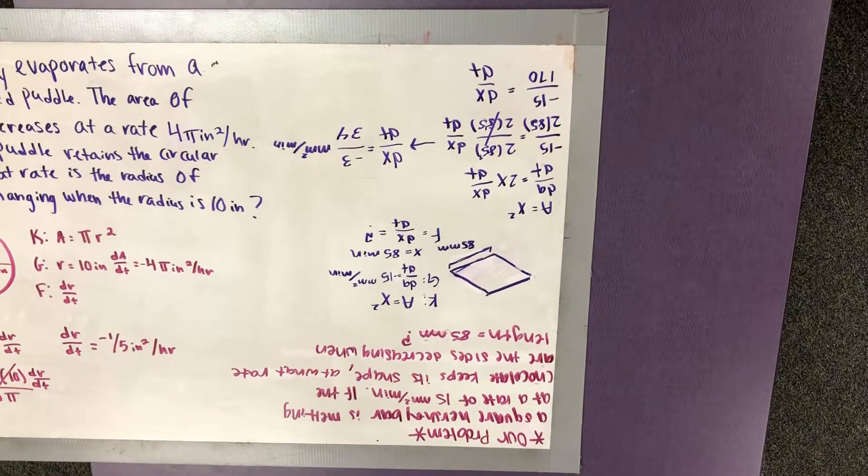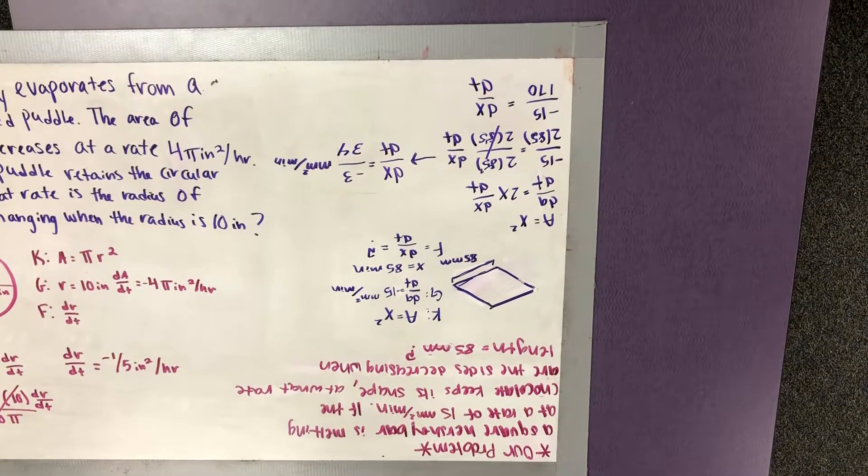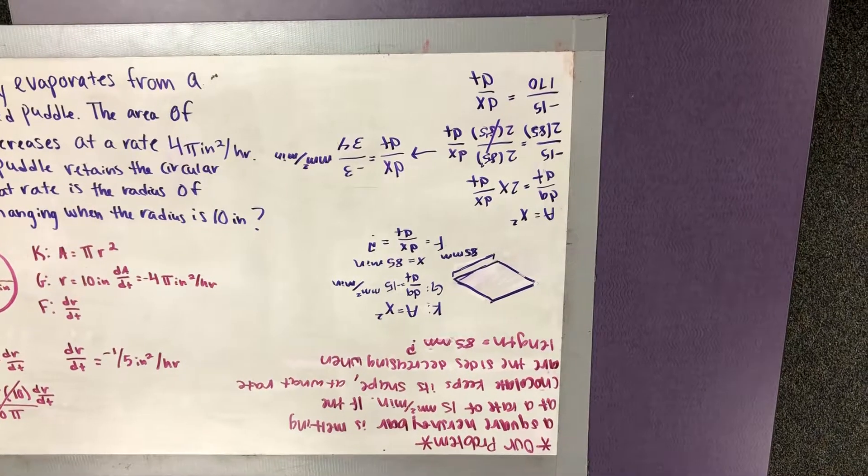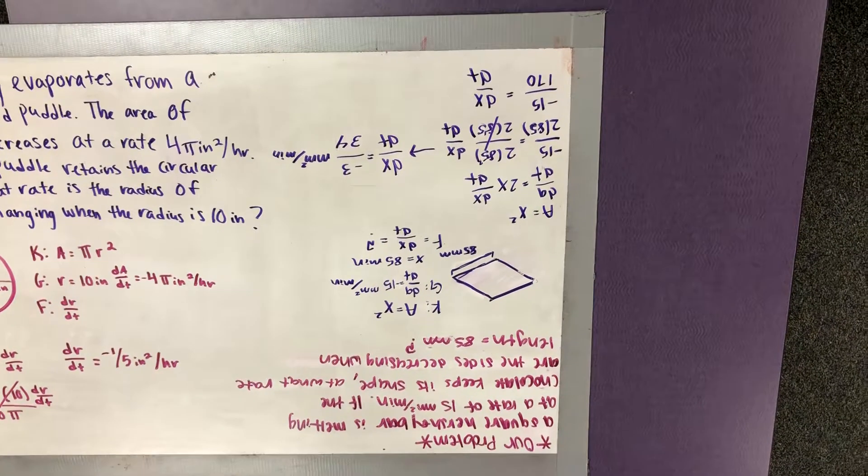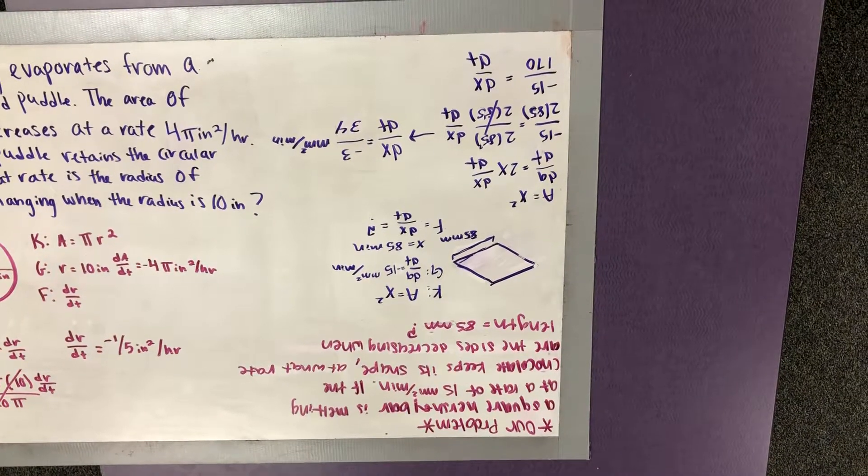Our known equation is A equals side squared. Our given is dA over dt equals negative 15 millimeters squared over minutes. We know it's negative 15 because it's melting. Our x equals 85 because that is the length.